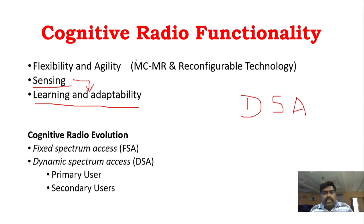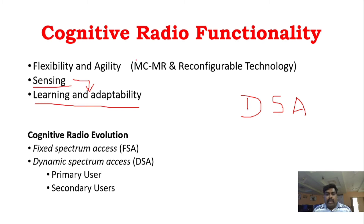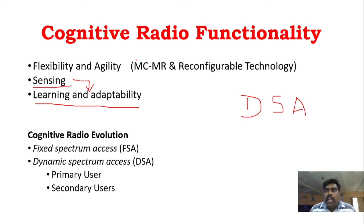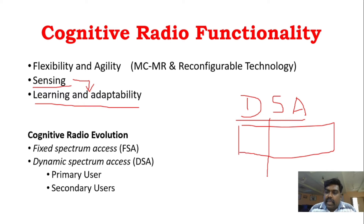Right from TV, mobile, satellite, microwave oven, radio waves — all of these are very important. So, the first thing in the spectrum is that only fixed spectrum access was used, allocating licensed users. That is called fixed spectrum access. Later, research evolved to change that fixed spectrum access to dynamic spectrum access.